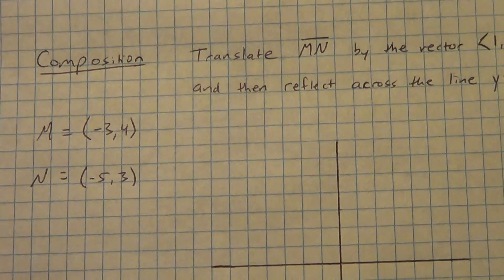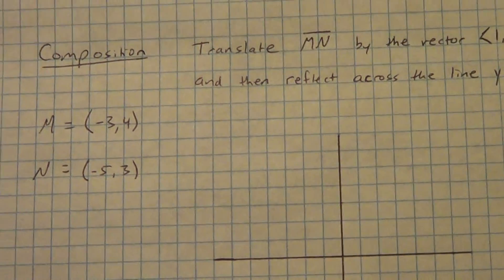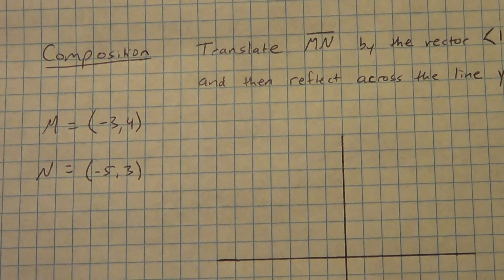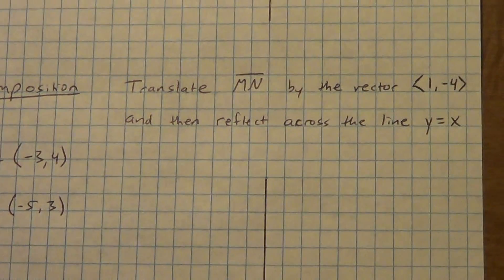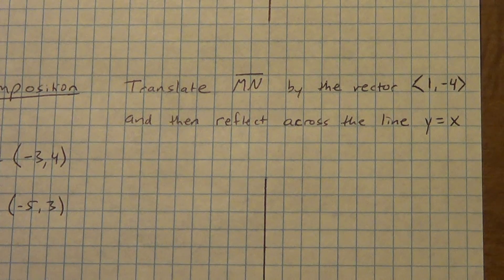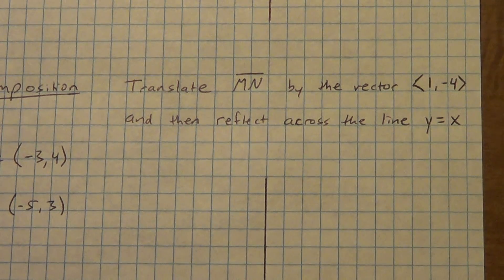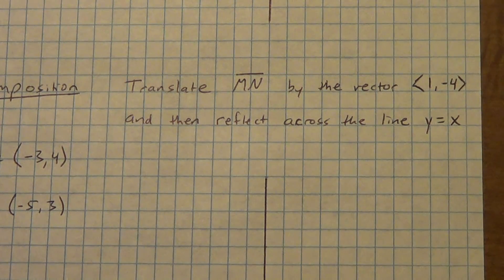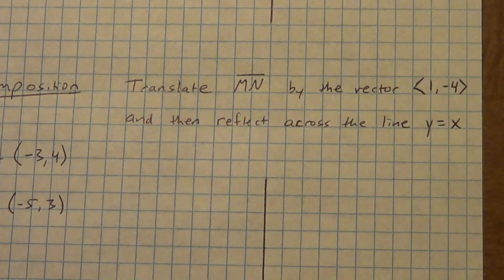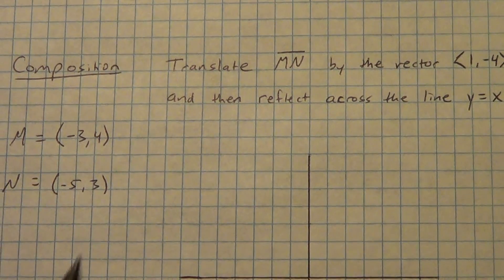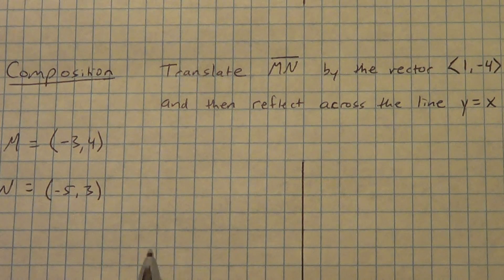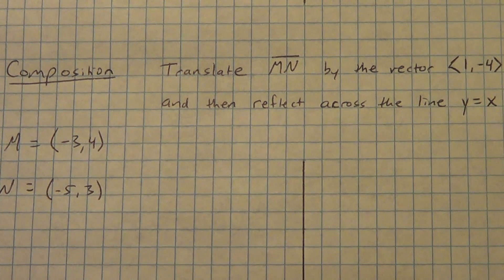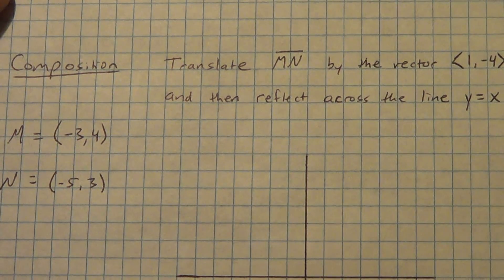All right, last one — we're going to do a composition. We'll start with MN at M (negative 3, 4) and N (negative 5, 3). We're going to translate by the vector 1, negative 4, and then reflect across the line y equals x. The vector part is pretty easy; the reflection across that line is going to be a little bit harder. Pause the video, get this copied down, and go ahead and attempt the vector part by yourself.